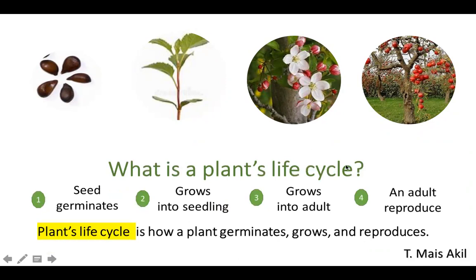So what is a plant's life cycle? First, the seed germinates, then grows into a seedling, then grows into an adult, and then the adult reproduces. A plant's life cycle is how a plant germinates, grows, and reproduces.